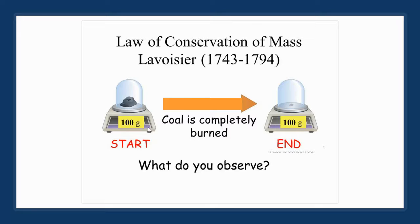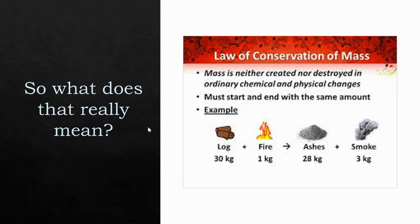Before we get started, we need to know what is the law of conservation of mass. So here's an image. We started with 100 grams of coal. The coal is completely burned, and the scale still says 100 grams in the end. We should observe that the beginning mass and the ending mass are exactly the same — that is the law of conservation of mass. It states that mass is neither created nor destroyed in ordinary chemical and physical changes. It must start and end with the same amount.